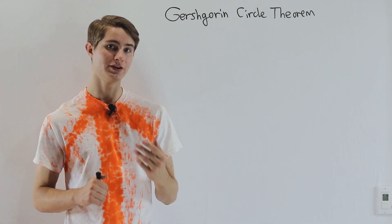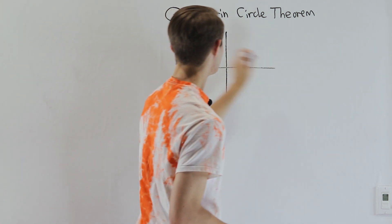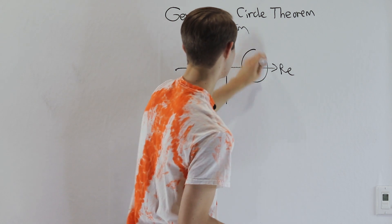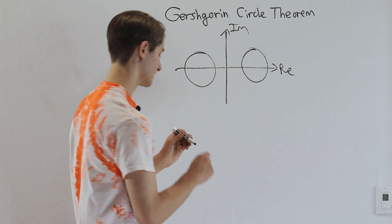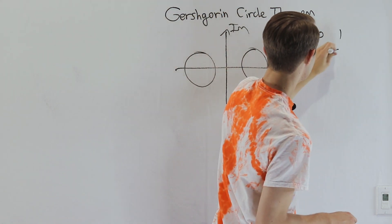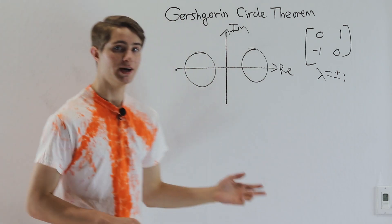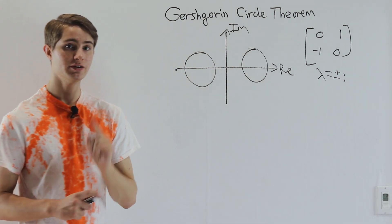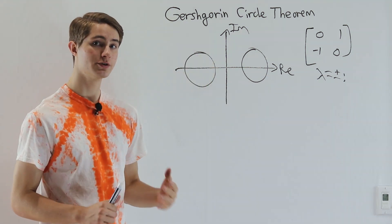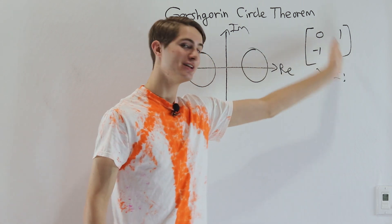The question is, how do we figure out those values of alpha? The Gershgorin Circle Theorem tells us that any eigenvalues of a matrix must lie within certain disks on the complex plane. It is possible for some eigenvalues to be complex — for example, the matrix [0, 1; -1, 0] has eigenvalues lambda equals plus or minus i. Whether the eigenvalues are real or complex, we can figure out exactly what ranges they're contained in. These disks will always have centers equal to the diagonal entries of the matrix A.